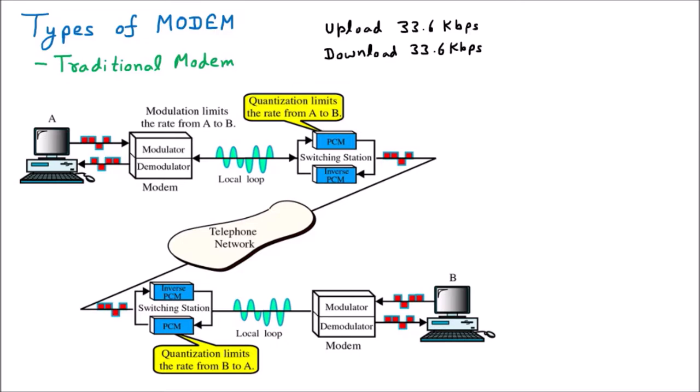Upload means if we are going to put a file on the internet, that is called uploading — for example, uploading a movie or uploading a video on YouTube. Downloading means taking the file into your system, like downloading a YouTube movie or using a torrent to download a movie. So both speeds were 33.6 kbps in that specific modem.